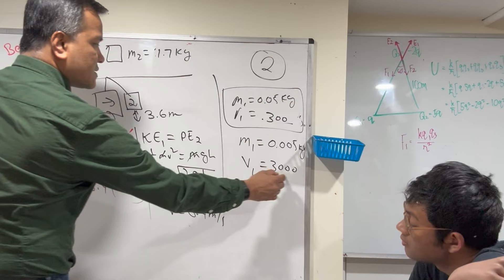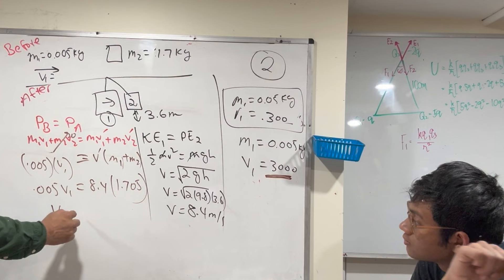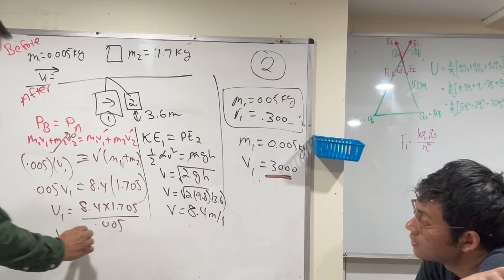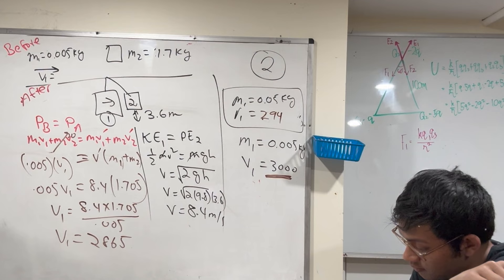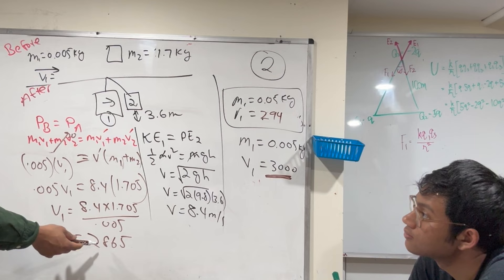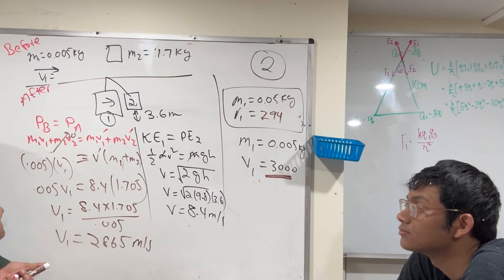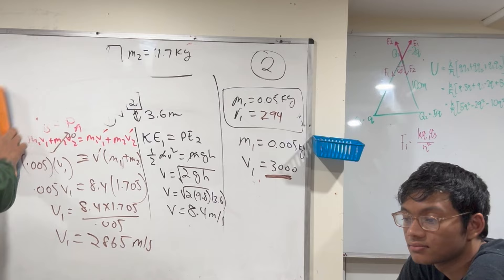Our prediction was at least 10 times bigger. So 8.4 × 1.705 ÷ 0.005 = 2864, which is almost 10 times 294. So v1 ≈ 2900 meters per second. If you decrease mass by 10 times, your velocity increases by 10 times — that's a big discovery!